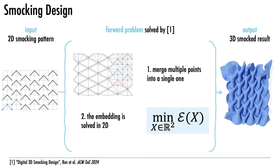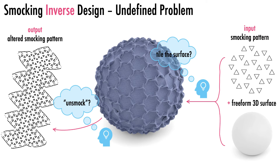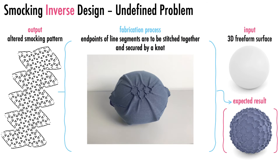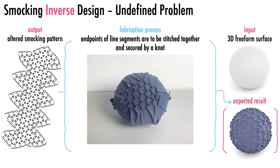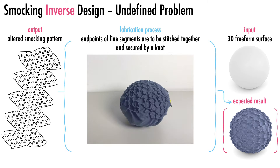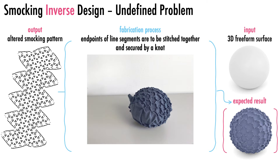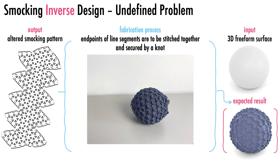In 2023, Wren and colleagues introduced an automatic method for digitally previewing smocked results. However, it is limited to standard patterns, for which the result is inherently flat. This limitation inspired us to look at the inverse problem: can the original stitching pattern be modified to introduce curvature? Is there a way to computationally modify a given smocking pattern such that, after fabrication, the smocked result closely approximates the target shape?